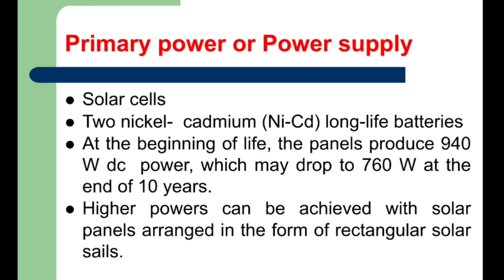The primary electrical power for operating the electronic equipment is obtained by solar cells. The individual cells can generate only a small amount of power, and therefore we use an array of cells in series and parallel connections so that we can generate more power.